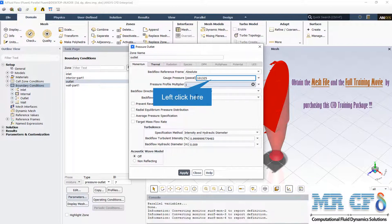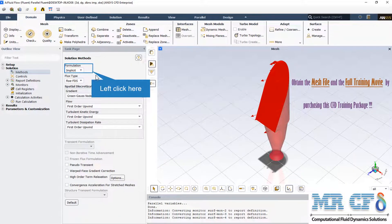From the solution method section, we use the implicit formulation and also ROE FDS for the flux type.